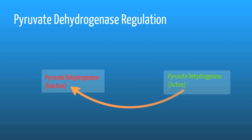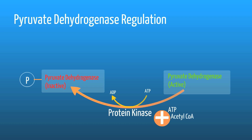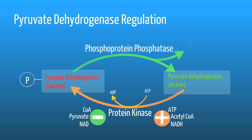The pyruvate dehydrogenase complex is mainly regulated by the addition or subtraction of a phosphate group. When a phosphate is added to the enzyme complex, it turns the complex off; when a phosphate group is removed, it turns the enzyme complex on. Pyruvate kinase is involved in turning the pyruvate dehydrogenase complex off by adding a phosphate group. Production of high levels of ATP, acetyl-CoA, or NADH causes this enzyme to turn off the complex — if too much energy is being produced, the body slows down metabolism. Conversely, if pyruvate, CoA, and NAD accumulate, indicating low energy, these decrease pyruvate kinase activity, leading to greater PDC activity and greater energy production.